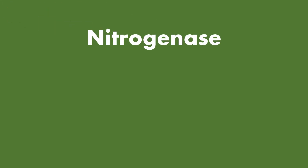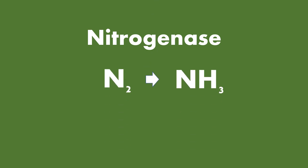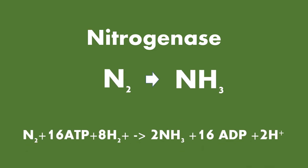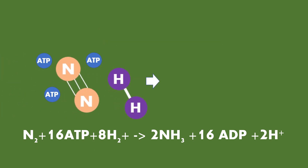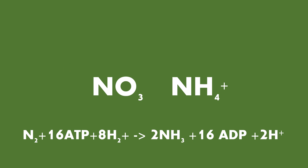Once the nodule is created, the bacteria are able to use an enzyme called nitrogenase to break down the N2 into ammonia. This requires energy from the plant in the form of ATP to combine with the nitrogen and hydrogen to form the ammonia. It takes 16 ATPs, which is a very intensive process for the legume plant. This is why the legume plant would much rather fix nitrogen from nitrate in the soil.